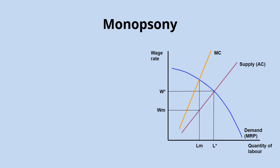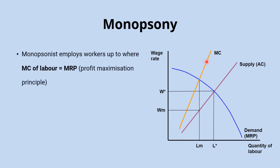We can see the implications of this in the diagram, where we have the usual upward-sloping supply curve for labour, the usual downward-sloping demand curve for labour equal to the marginal revenue product, and then the marginal cost curve for labour rising twice as steeply as the average cost — the supply curve for labour. The monopsonist, being a profit maximiser, will only employ workers up to the point where marginal cost of labour equals marginal revenue product.